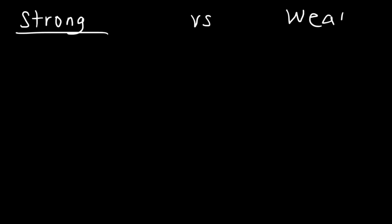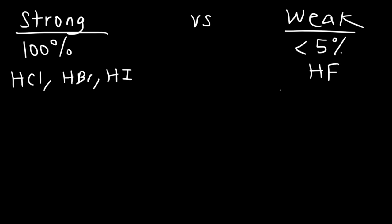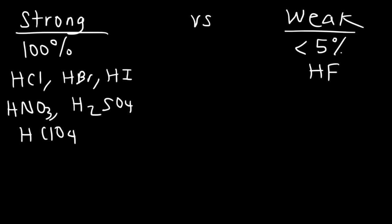Strong acids ionize completely; weak acids only partially ionize — less than 5%. Strong acids form strong electrolytes in water and the solution conducts electricity well. Weak acids form weak electrolytes. The six most common strong acids are HCl, HBr, HI, HNO₃ (nitric acid), H₂SO₄ (sulfuric acid), and HClO₄ (perchloric acid). Note that HF is a weak acid.